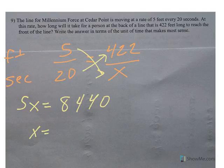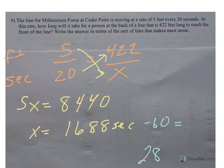I divide both sides by 5, and I end up with an answer of 1,688 seconds. That doesn't mean anything to me, but I know there are 60 seconds in a minute. So if I divide this by 60, that'll put me into minutes, and the answer is 28.13 minutes.